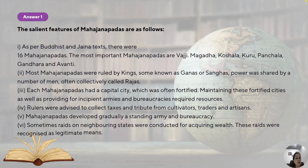As per Buddhist and Jain texts, there were 16 Mahajanapadas. The most important were Vajji, Magadha, Koshala, Kuru, Panchala, Gandhar and Avanti.